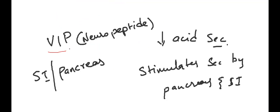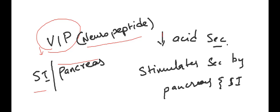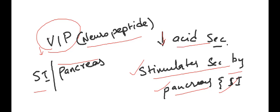Coming to VIP — vasoactive intestinal peptide. This is also called a neuropeptide and is derived from neural cells located in the small intestine and pancreas. VIP decreases acid secretion and stimulates secretion from the pancreas and small intestine.